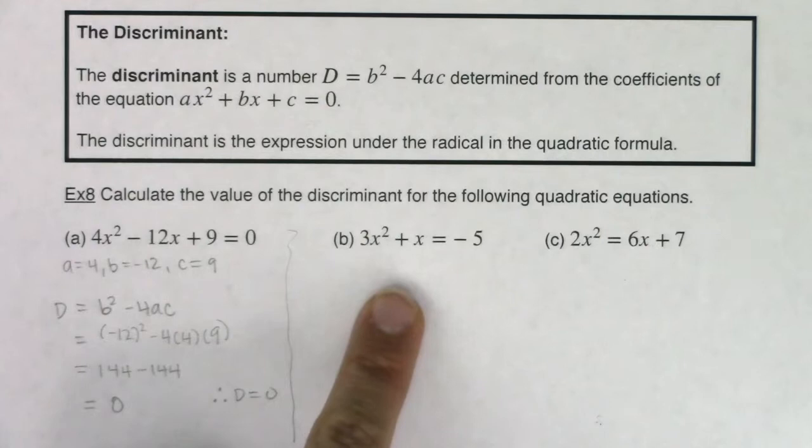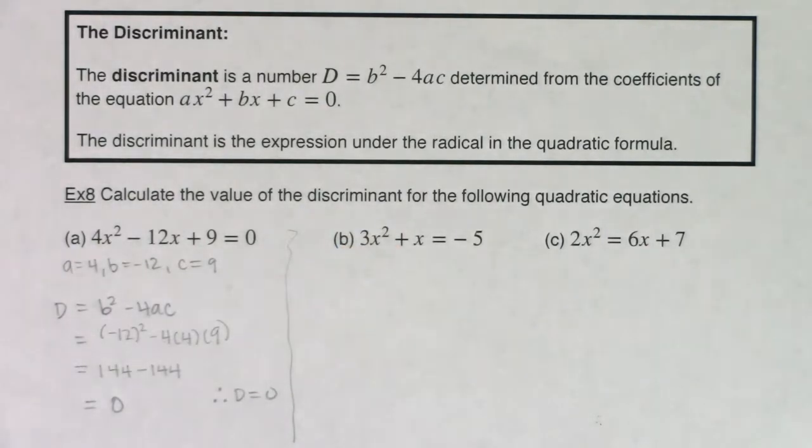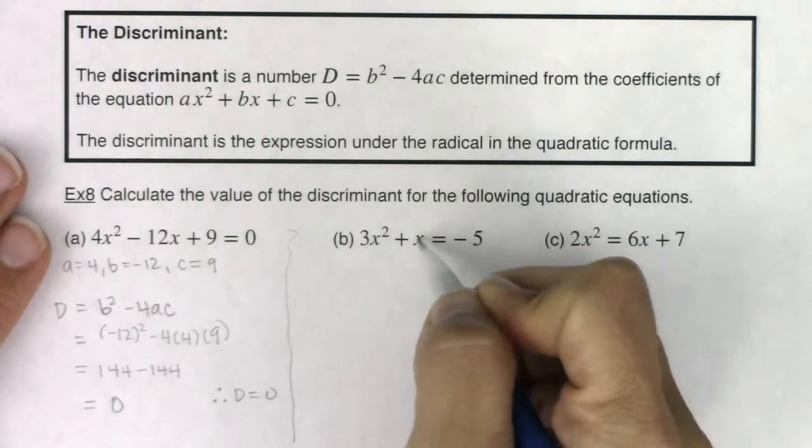Now take a look at the equation in part b. Yes, it's quadratic. It has that squared term, but it is not set equal to 0. So the first thing I need to do is move the 5 over.